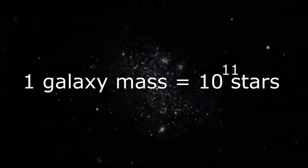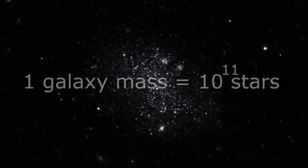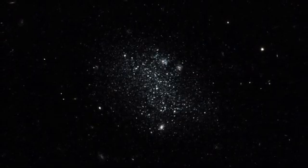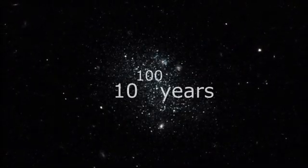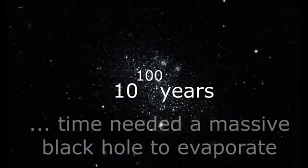The decay time for a supermassive black hole of roughly one galaxy mass, or 10 to the power of 11 solar masses, because of Hawking radiation is in the order of 10 to the power of 100 years. So entropy can be produced until at least that time.